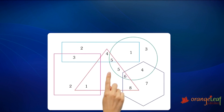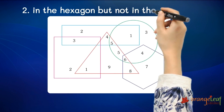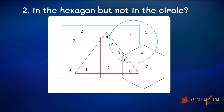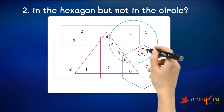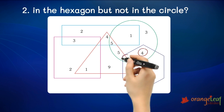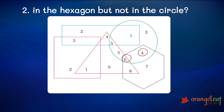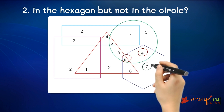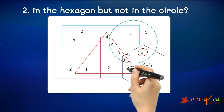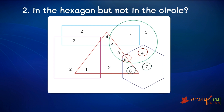Can you tell me the sum of the numbers present in the hexagon but not in the circle? There are four numbers in the hexagon and two numbers in both the hexagon and the circle. So we have only seven and eight remaining. The sum of seven and eight is fifteen.